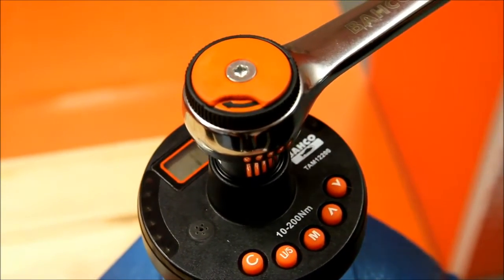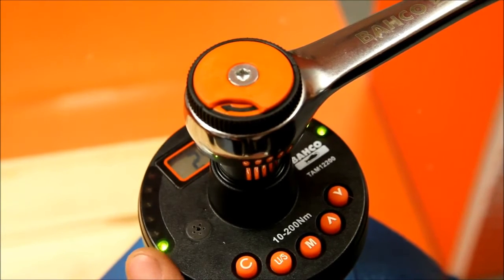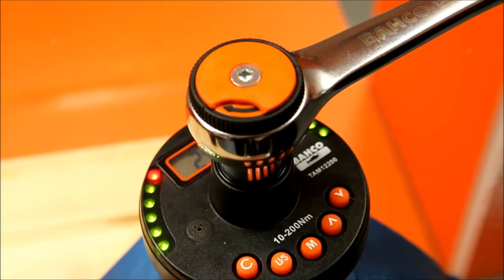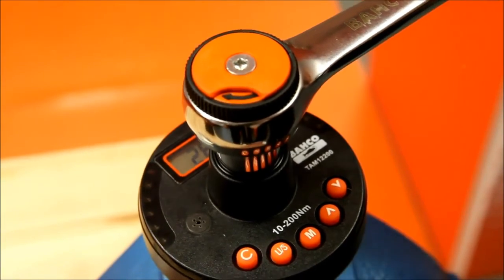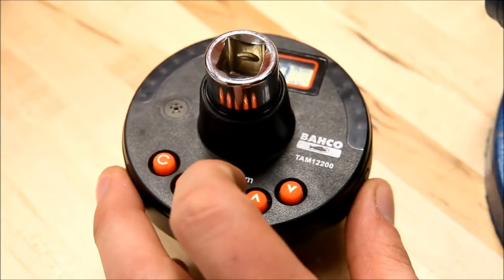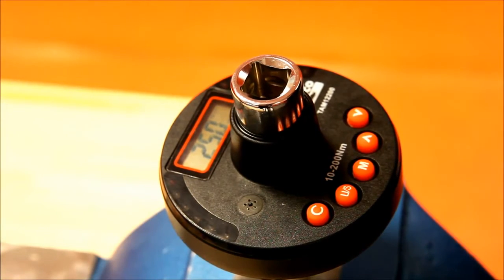We put in the ratchet and we start to torque. As you can see, the LED lights will give us an indication of how close we are to our value. When the red light is showing and we hear the tone, we reach the right level of torque. By clicking the M button we can record the value we just tightened.